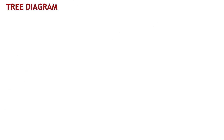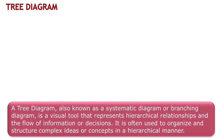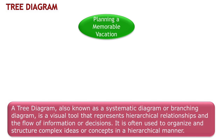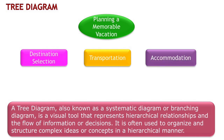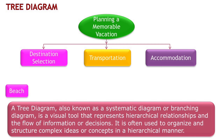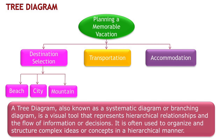A Tree Diagram is a visual tool that arranges ideas or concepts in a structured manner. It helps us understand relationships and the flow of information or decisions, and simplifies complex information. For example, if we are planning a memorable vacation, we start with the main categories: destination selection, transportation, and accommodation — these act as the main branches of our diagram. Under destination selection, we can further break down options like beach, city, and mountain. Under transportation, we can have branches for flight, train, and road, indicating different modes of transportation available.